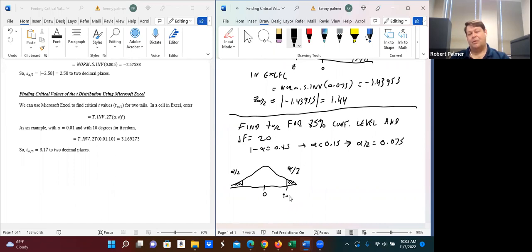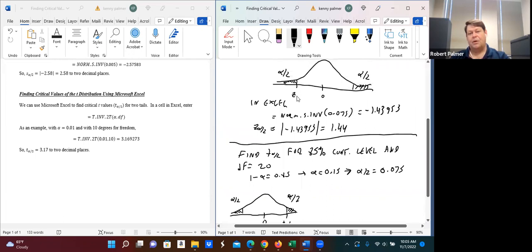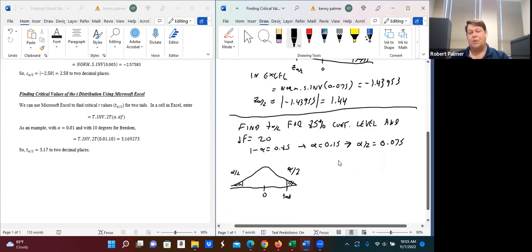So we're finding this value right here. This would be our t of alpha over 2, which reminds me, I should have put this z of alpha over 2 here. We can fix that. And so we're going to enter T.INV.2T.